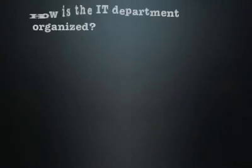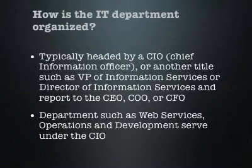So, how is an IT department organized? Typically, it is headed by a chief information officer, or someone with another title such as vice president of information services or director of information services, and they would report to the CEO, COO, or CFO of a company. Other departments such as web services, operations, and development would serve underneath the CIO. Take a look at this graphic that displays how a company might typically organize their IT department.